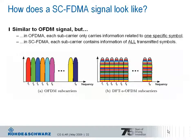This picture visualizes what we just learned. When we compare classical OFDM used in the downlink and single carrier FDMA — or DFT-spread OFDM — used for the uplink, in OFDM each subcarrier carries only information related to one specific symbol, as indicated by the color used for the subcarriers on the left-hand side of the graph. In single carrier FDMA, each subcarrier contains information from all transmitted symbols. On the right-hand side, each subcarrier carries a little bit of red, green, blue, orange, and so on. By performing DFT precoding, we shift around the problem of high amplitudes due to subcarriers being in phase.